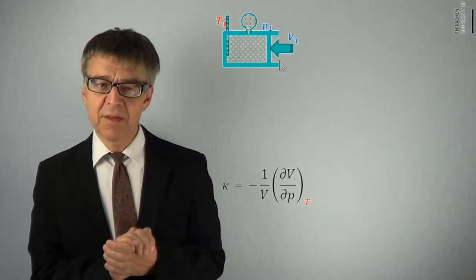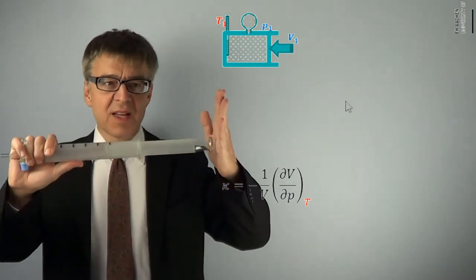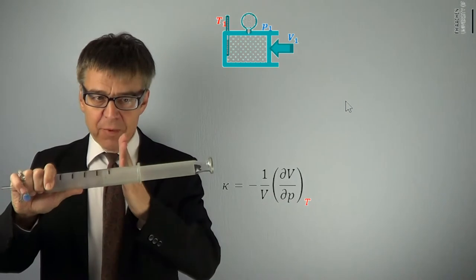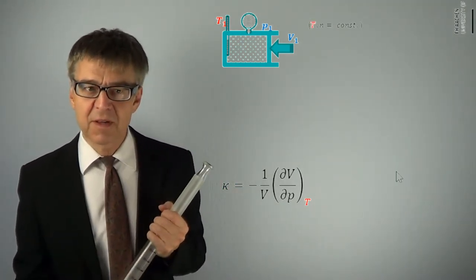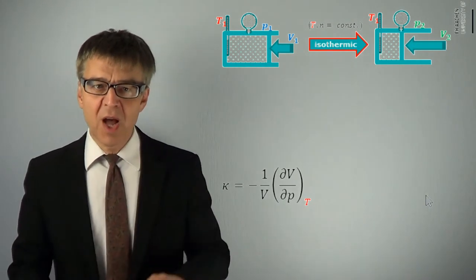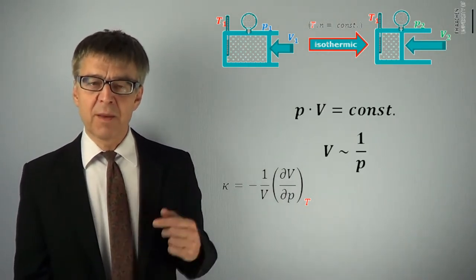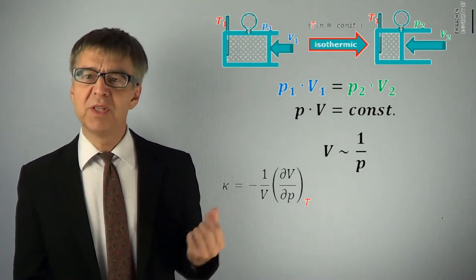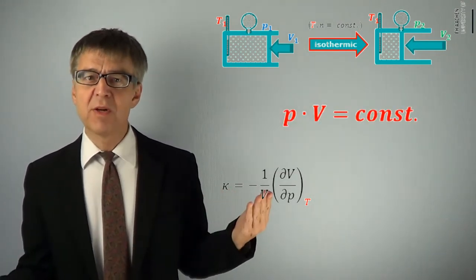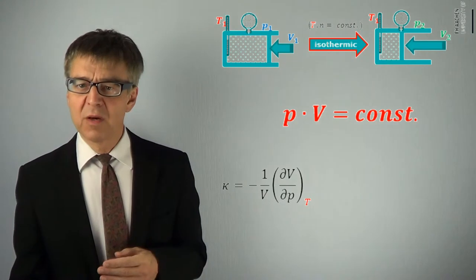Let's examine the compressibility kappa of a gas, like the scientist Boyle and Marriott did several hundred years ago. Examining how volume depends on pressure, we find that at constant temperature, a doubling of pressure causes the volume to be reduced to half. We can say that pressure and volume are inversely proportional. The product P times V is a constant. P1 times V1 equals P2 times V2. P is inversely proportional to V. This is Boyle's law. With its help, you can easily calculate the compressibility of an ideal gas to 1 over P.